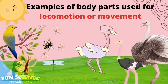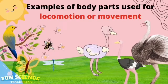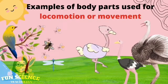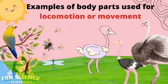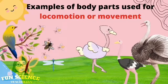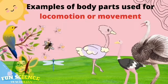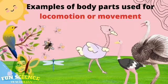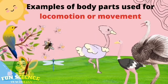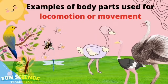Most birds and insects can fly because of their wings. Bats, which are mammals, can also fly. Ostrich has wings. However, because of its massive weight, it cannot fly.